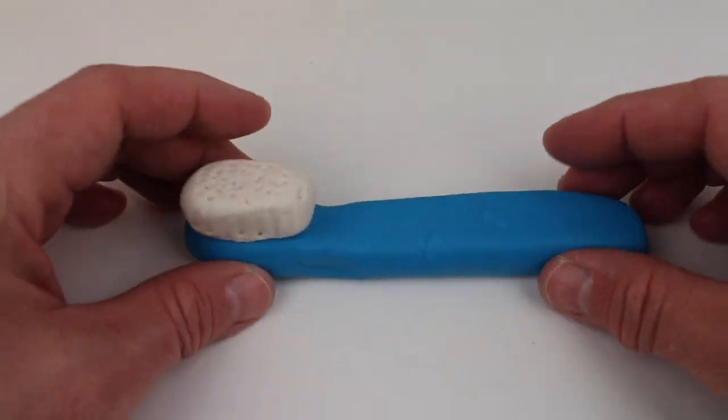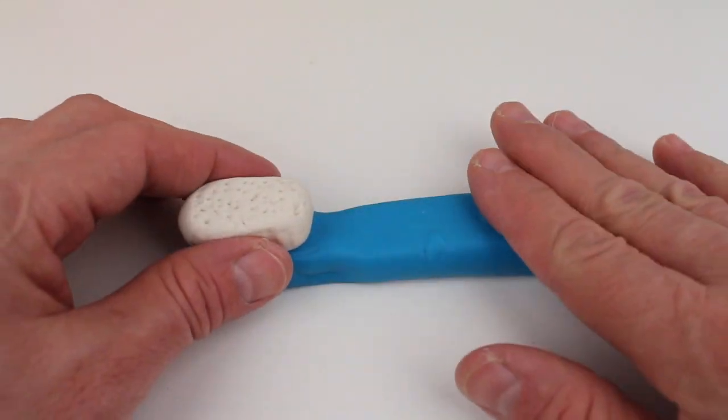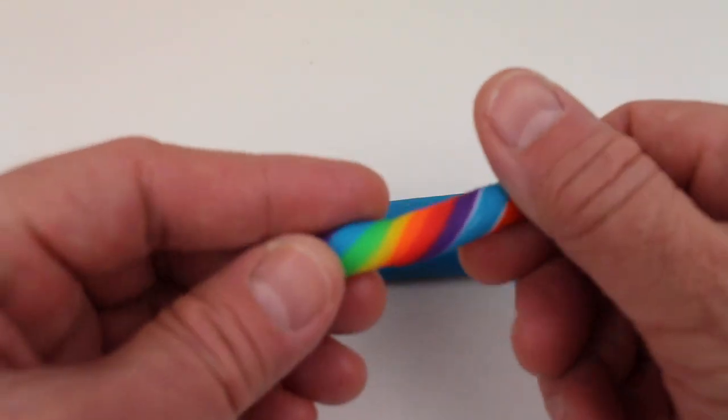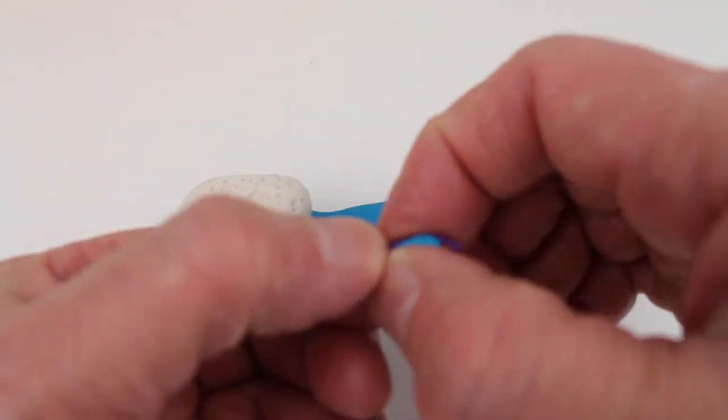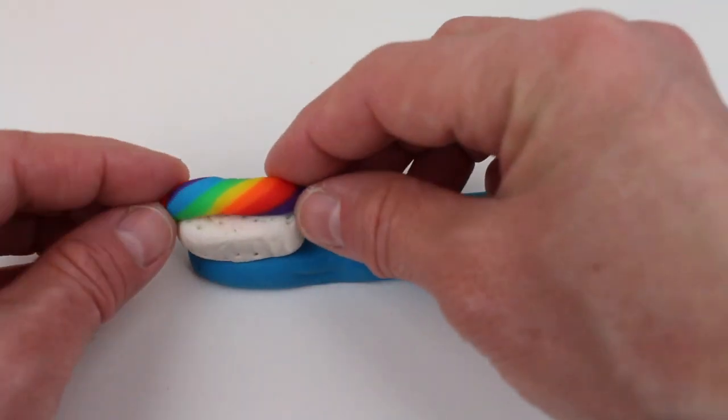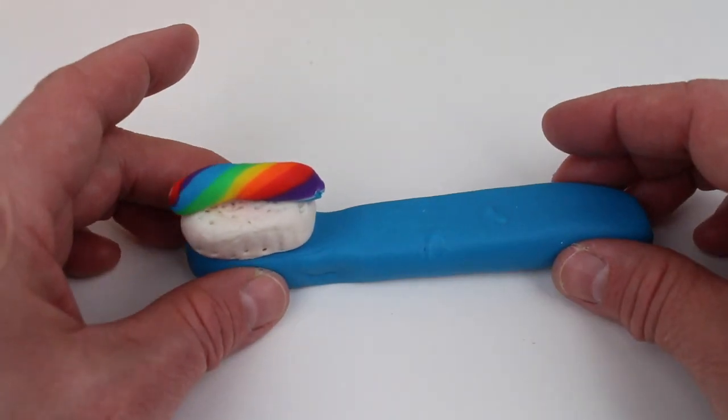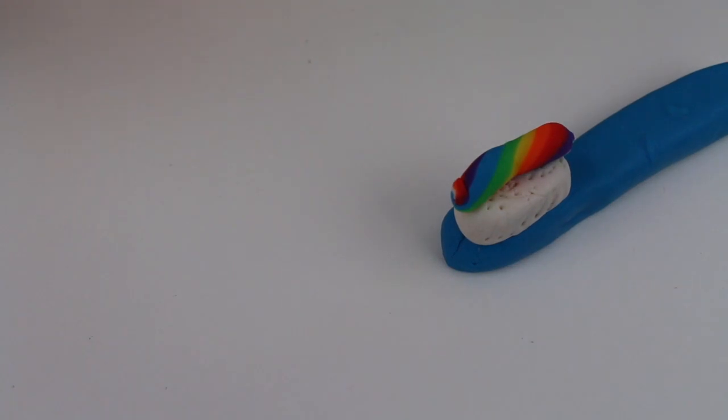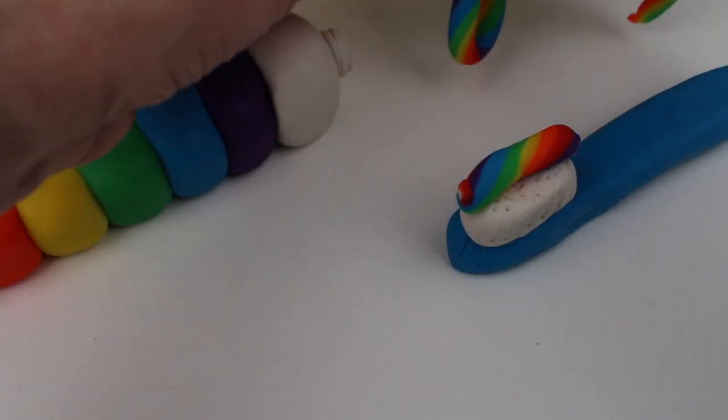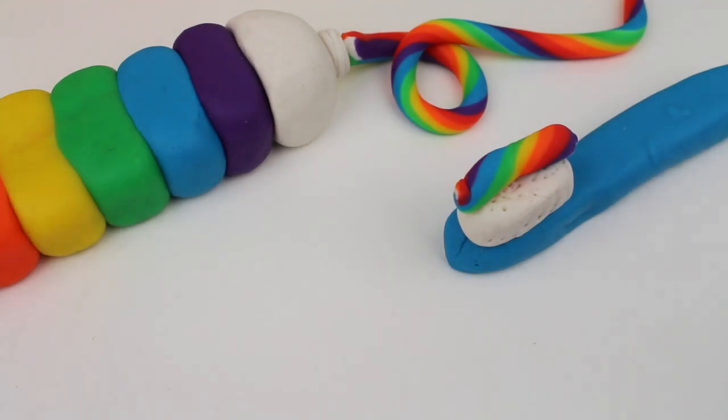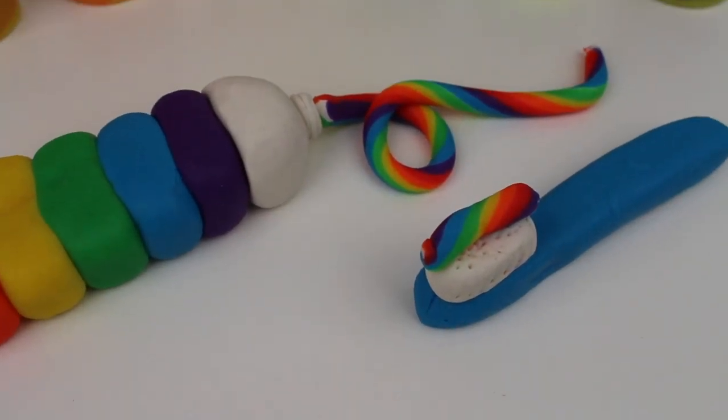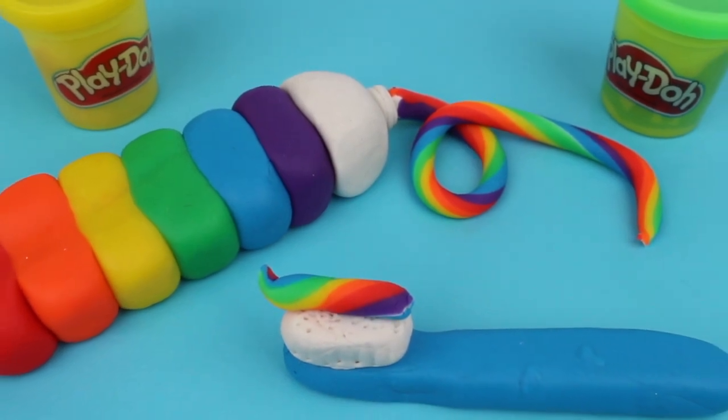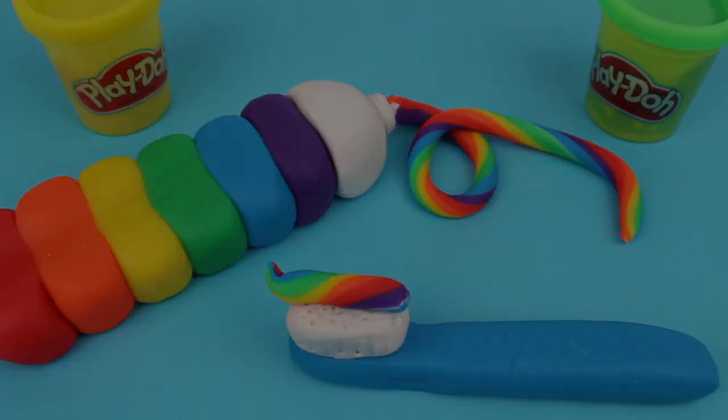And look! We have a toothbrush. And now let's add some toothpaste. There you have it! Rainbow toothbrush and toothpaste. Thank you.